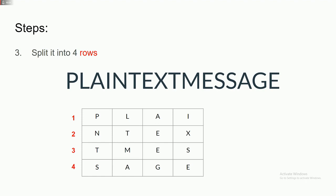Then we split it into four rows. Plain text message is 16 characters, which splits evenly into four rows, so we don't need to worry about adding any extra at symbols.